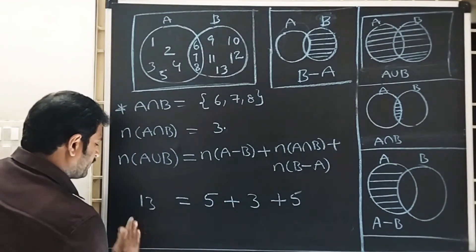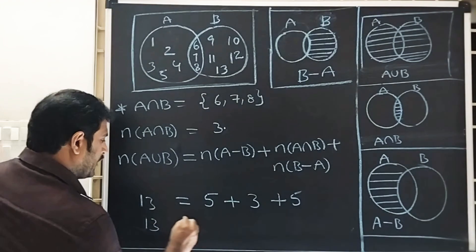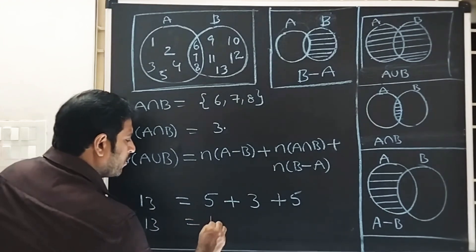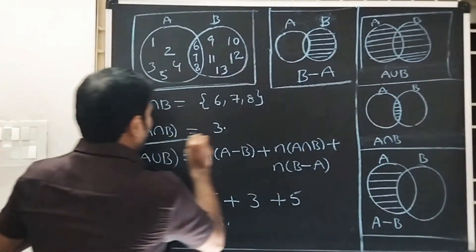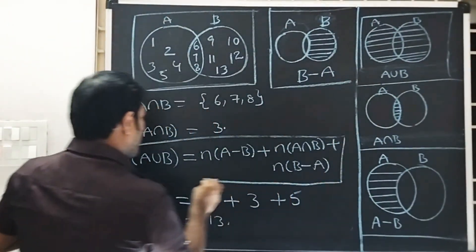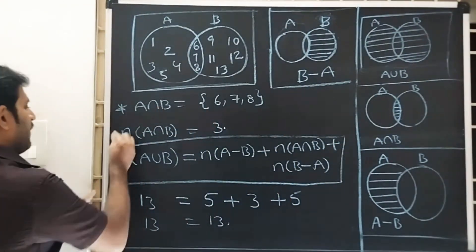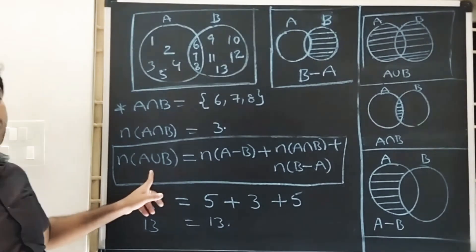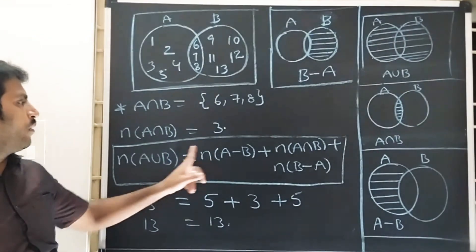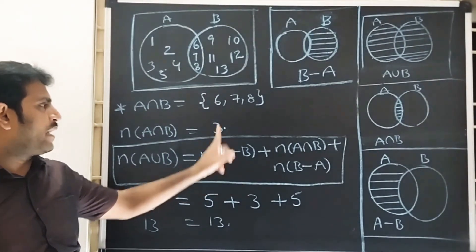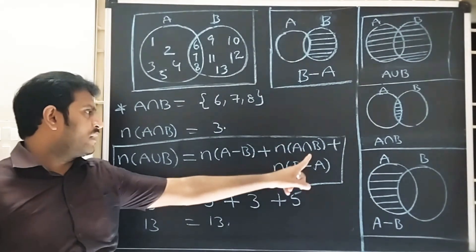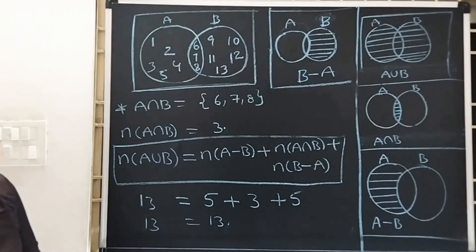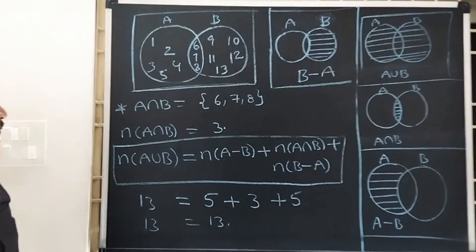N of A union B is equal to N of A minus B plus N of A intersection B plus N of B minus A.